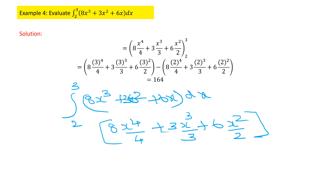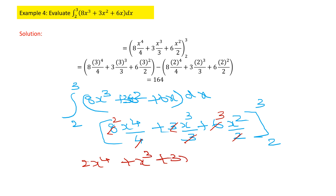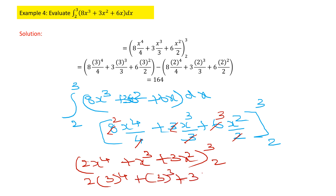Once integration is done, remove the integral sign and place the limits. Before substituting, simplify if possible: 8/4 gives 2, 3/3 cancels to 1, and 6/2 gives 3. This gives 2x⁴ plus x³ plus 3x² between the limits 2 and 3.